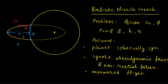As we can see in the diagram, h and d are determined by the shape of the orbit and how it intersects the planet's surface. Therefore our first goal is to determine p and e in the conic section equation from the initial conditions v0 and φ.